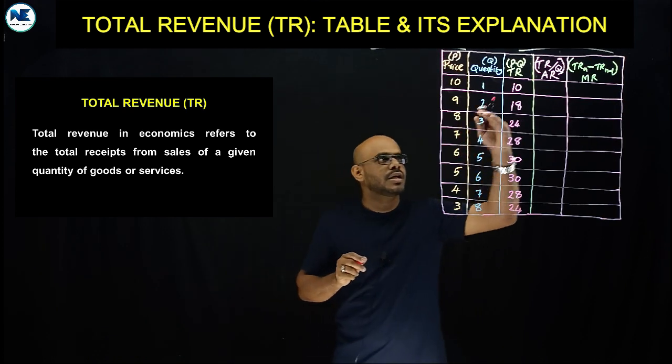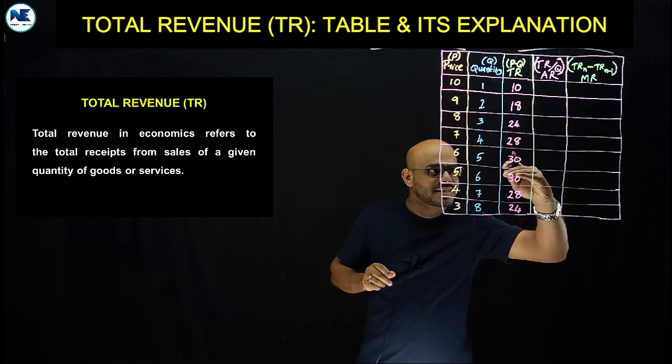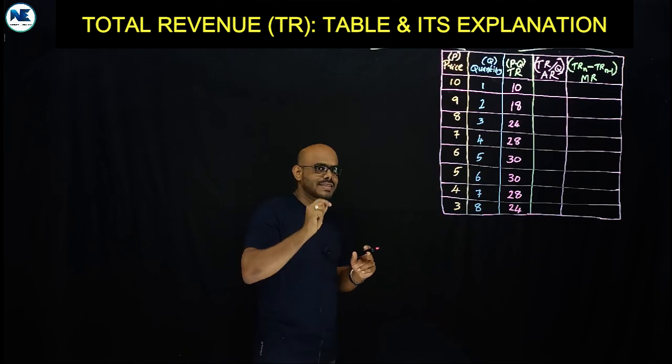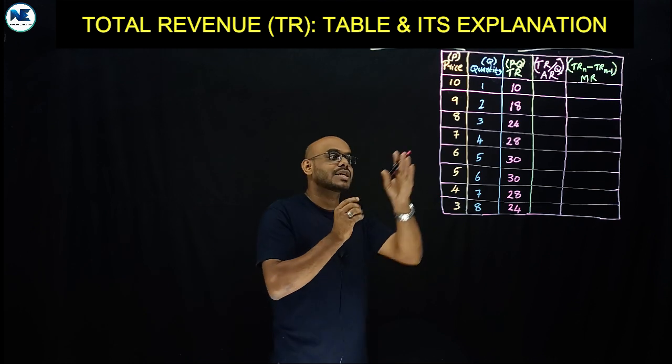This is total revenue. You can see one type of relationship, and you will be able to understand the logic of these things.